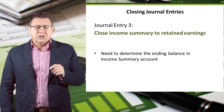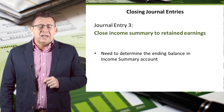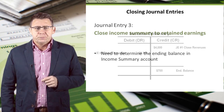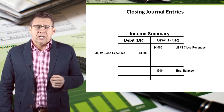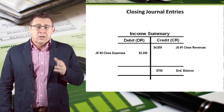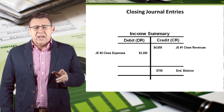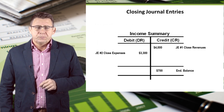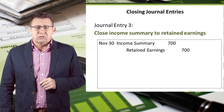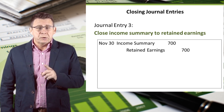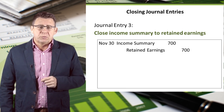The third journal entry is to close income summary to retained earnings. To do this, we need to figure out the ending balance in income summary. Once we post the first two closing entries, we can determine the balance of income summary — it should equal our net income. In this case, the balance is a $700 credit. So to close income summary, we debit the account $700. The balance is now zero and will remain zero until next period when we close our temporary accounts.